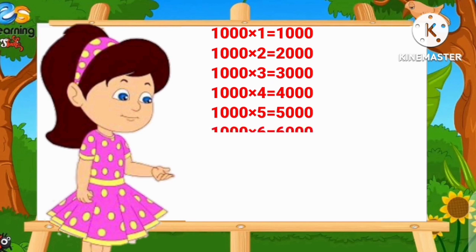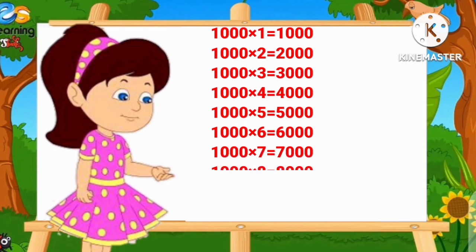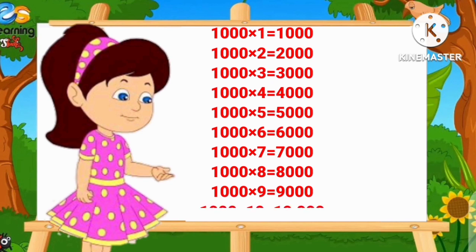1,000×6=6,000. 1,000×7=7,000. 1,000×8=8,000. 1,000×9=9,000. 1,000×10=10,000.